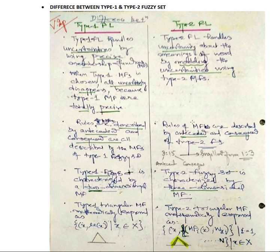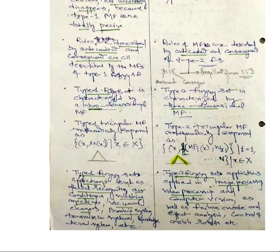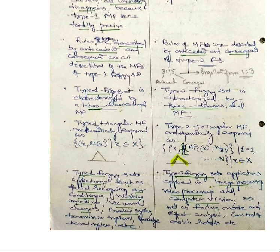Under the Type 2 fuzzy set, the rules of the membership functions are also described by antecedent and consequent. But when you compare antecedent and consequent in Type 2 fuzzy set, you can clearly distinguish them. Type 1 fuzzy set is characterized by two dimensions — it is having only two dimensions. Whereas Type 2 fuzzy set is having three dimensions, as shown in the slides.